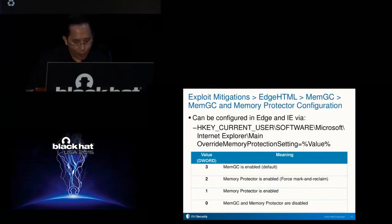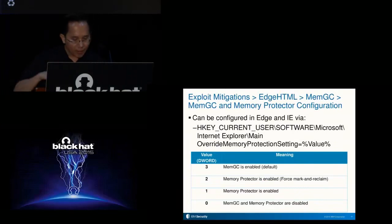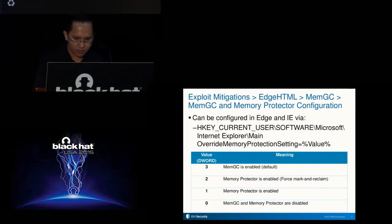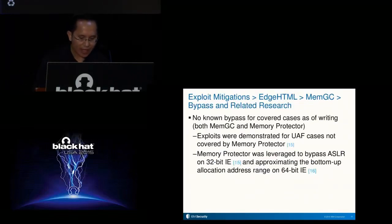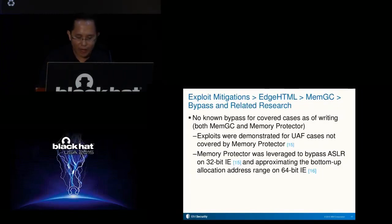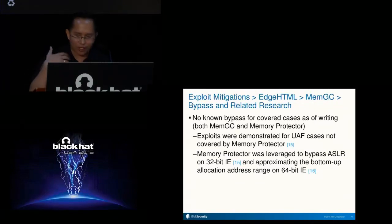MemGC is enabled by default. One way to configure it in both Edge and IE is via the override memory protection setting, which can be set by a registry entry. If you are root-causing a rendering engine bug, it would be best to temporarily set this to zero and enable PageHeap. As of this writing, MemGC and Memory Protector still have no known bypass for covered cases, but new bypass techniques may be developed in the future. However, exploits were demonstrated for UAF cases not covered by Memory Protector, and there is published research on using Memory Protector to bypass ASLR on 32-bit IE and approximating bottom-up allocation address range in 64-bit IE.